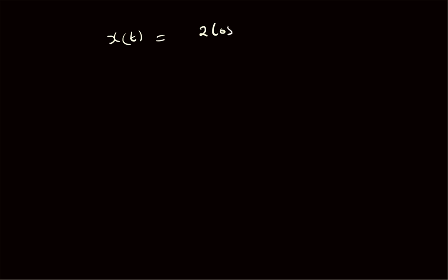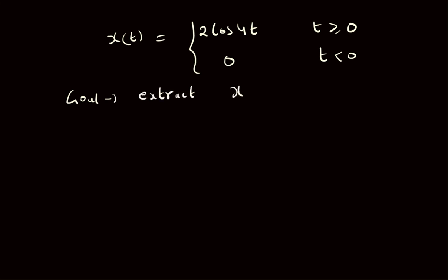Hello, welcome. In this short video let us look at an example illustrating how to extract the even and odd components of a given signal. Consider the following signal: x of t is equal to 2 times cos of 4t for values of t greater than or equal to 0, and 0 for t less than 0. Given this signal, our goal is to extract the even component and the odd component of the signal.